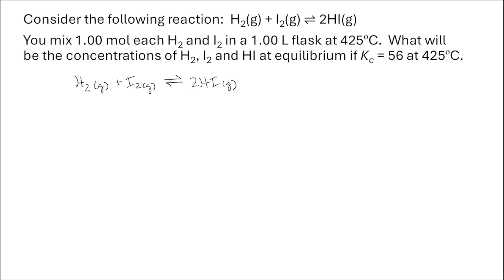I'm going to start this problem by constructing a chart. These are typically referred to as ICE charts, where I stands for initial. Let's go ahead and fill in our initial concentrations: we have one molar concentrations of both H2 and I2, and our initial concentration of HI is zero.